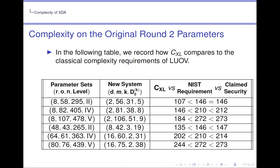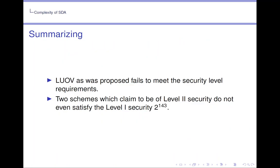In the following table we record how C_XL compares to the classical complexity requirements of LUOV, and we see in each case that C_XL is smaller than the NIST requirements. So summarizing it, LUOV as was proposed fails to meet the security level requirements. Two schemes which claim to be of level 2 security do not even satisfy the level 1 security of 2 to the power of 143.